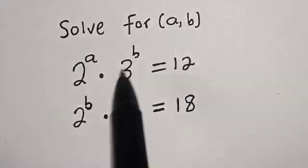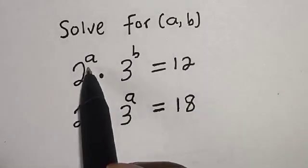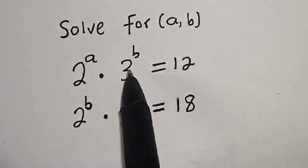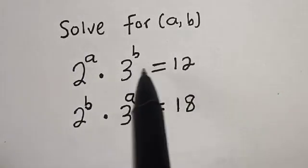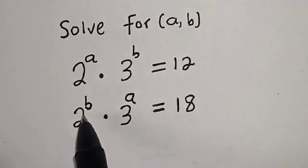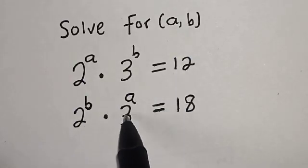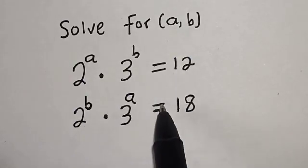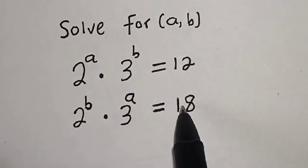Solve for A and B. 2 raised to power A multiplied by 3 raised to power B is equal to 12. 2 raised to power B multiplied by 3 raised to power A is equal to 18.